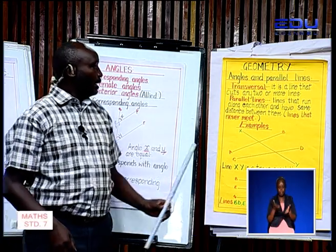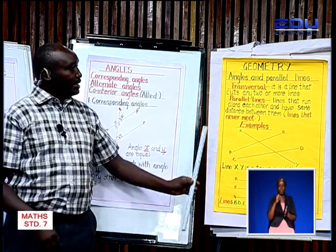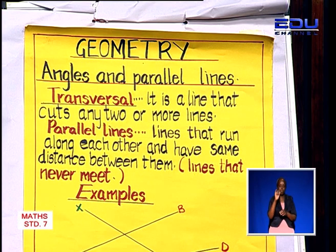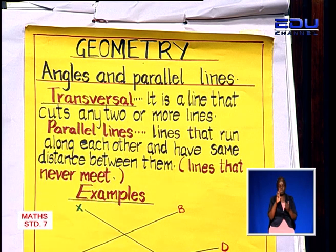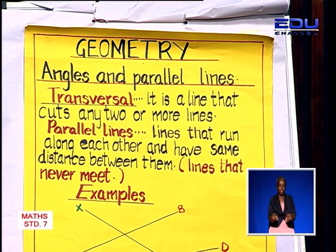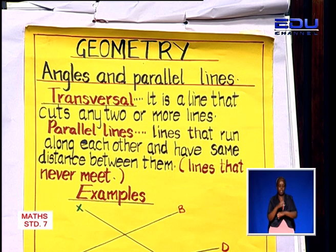A transversal line is a line that cuts two or more lines. Then we have the parallel lines, and parallel lines can be defined as lines that run along each other and have the same distance between them. In simple language, we normally say that parallel lines are lines that shall never meet.